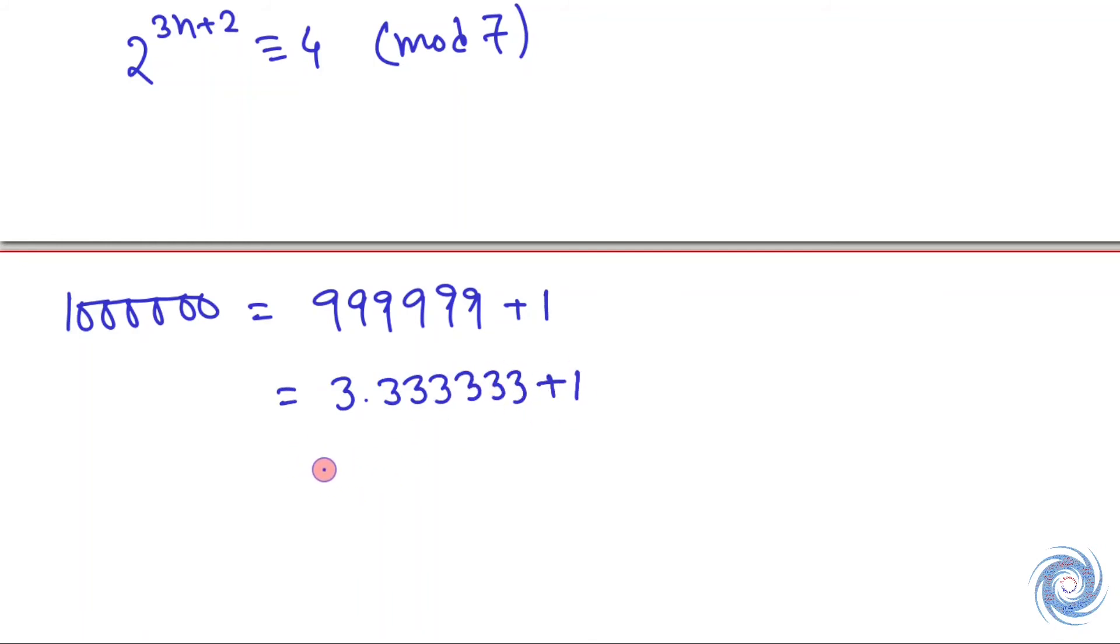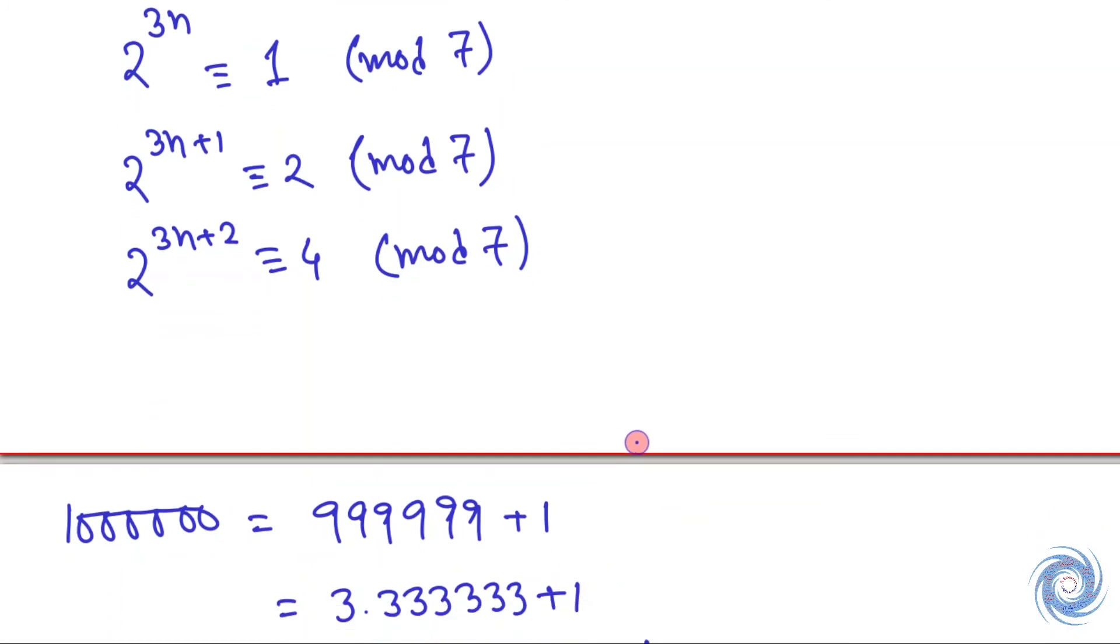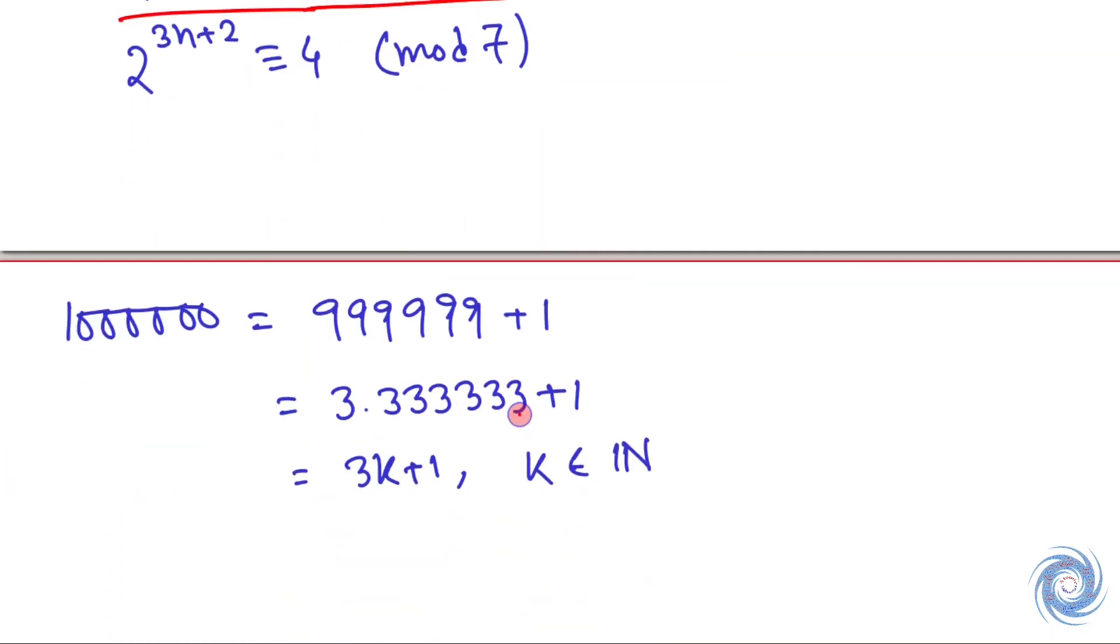The number 1,000,000 is of the form 3k+1, where k belongs to the natural numbers. Therefore, in this case, we have remainder 2.